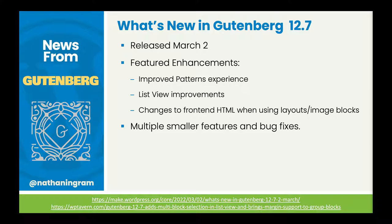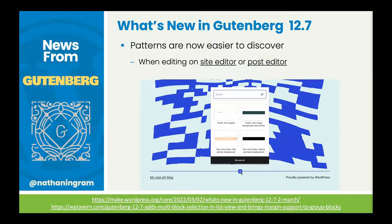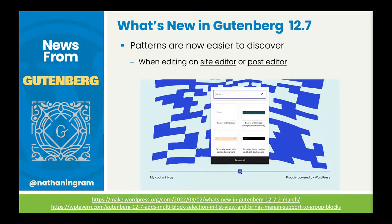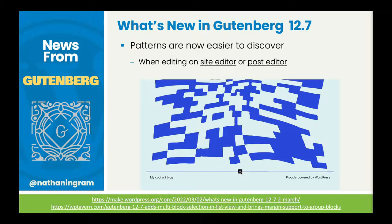Gutenberg 12.7 was released on March the 2nd with a number of feature improvements: improving the patterns experience, some list view improvements, and changing some front-end HTML. The patterns now associated with the area where you are in the editor are much easier to find — you can click on the inserter and get suggested patterns right there. That makes patterns a lot easier to deal with. Patterns overall really do make the block editor easier to use.